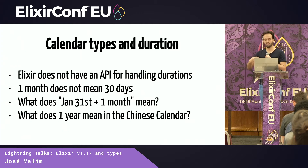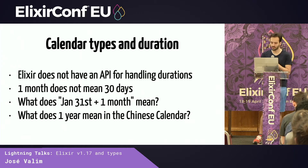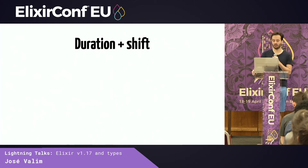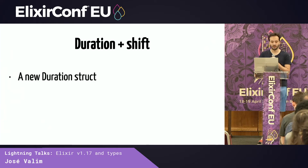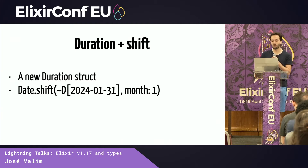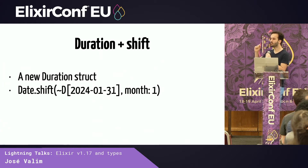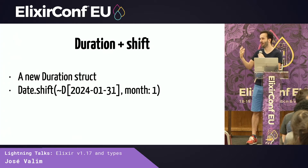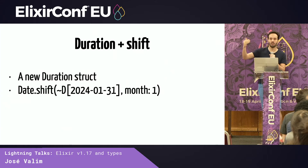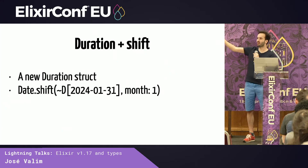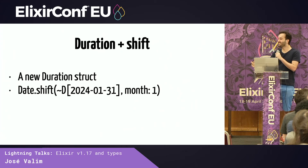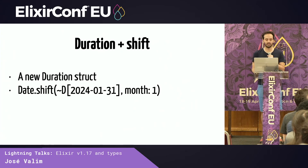In order to answer all these questions and provide a proper abstraction, Theodore sent a fantastic pull request that adds the duration data type and the shift operation to Elixir. So it's a new duration struct, and now you can shift a date by one month. Note that we are explicitly calling it shift, not add, because this is not an arithmetic operation. If you shift January 31st by one month, you get February 28th, and if you take one month back, that goes back to January 28th. So let's not pretend this is arithmetic — this is a shift operation.